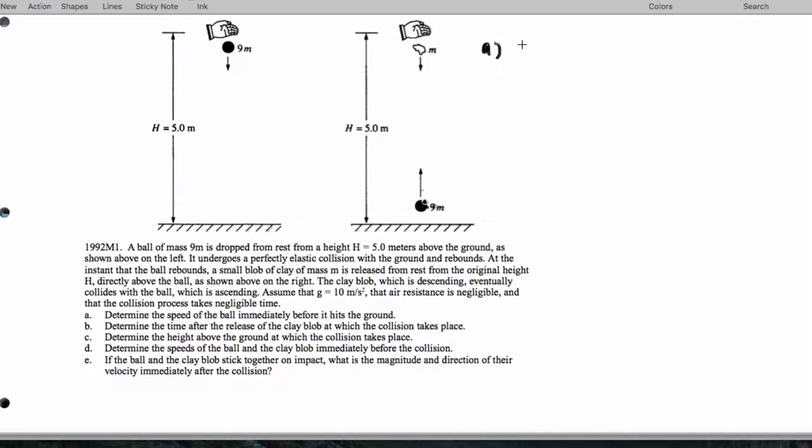So the speed of the ball right before it hits the ground. Let me use a different approach. Let's say MGH equals one half MV squared. And so square root of 2GH is the speed before it hits the ground. And then we want to know the time and the height at which the collision takes place.